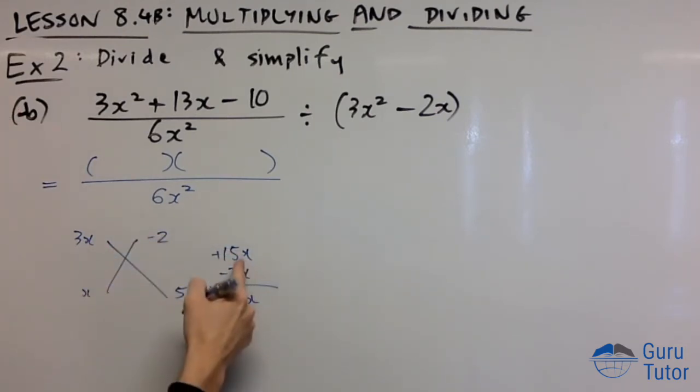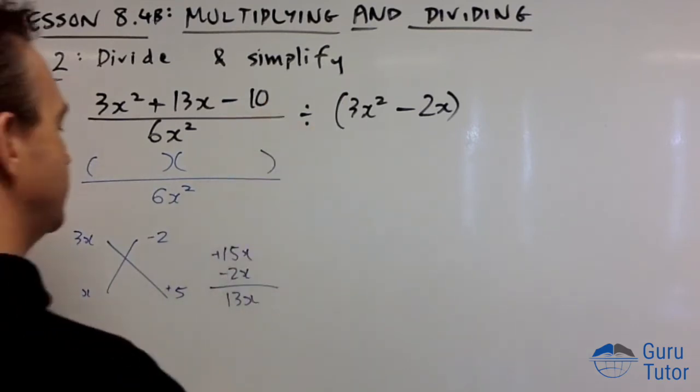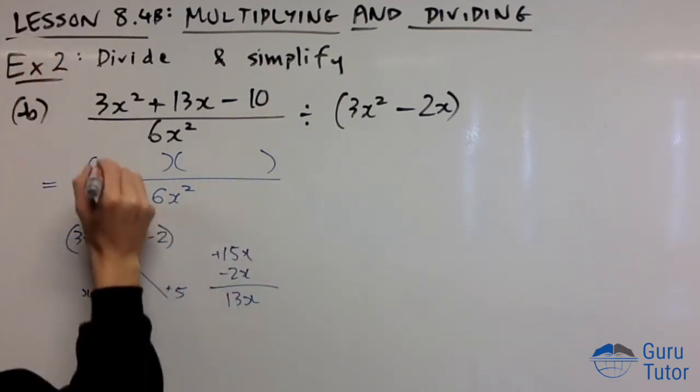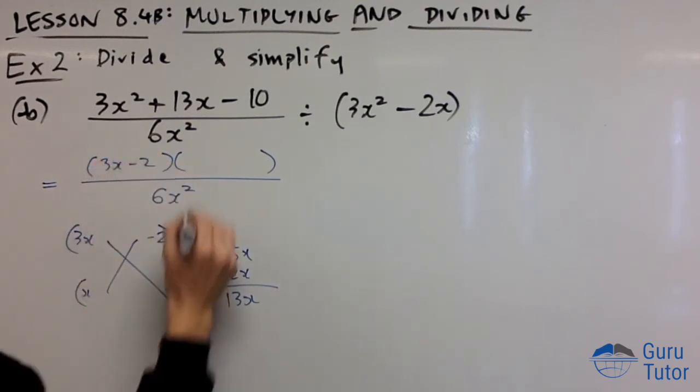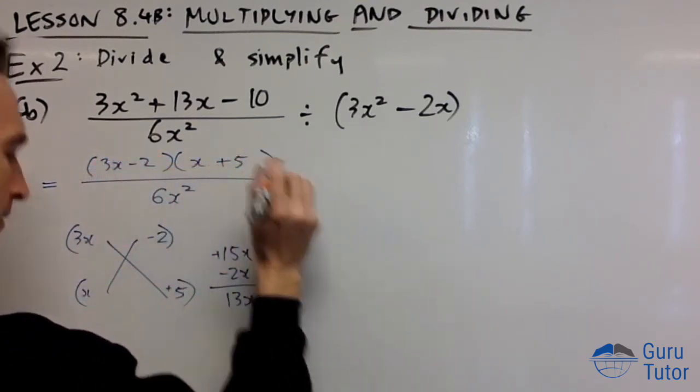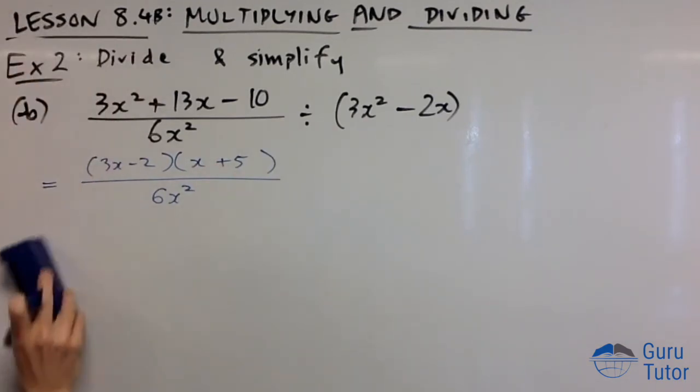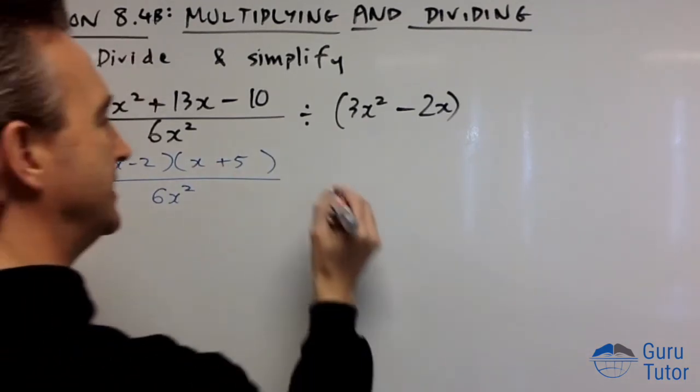Is that possible? Yes. We want a plus and a minus, so we need -2x here and +15x here. Final check to make sure this works: that times that equals that, yes. That times that equals that, yes. Looks good: (3x-2)(x+5). I'm going to need this space, so I'm just going to erase that. Don't erase your working - I'm only doing it because I need the board space.